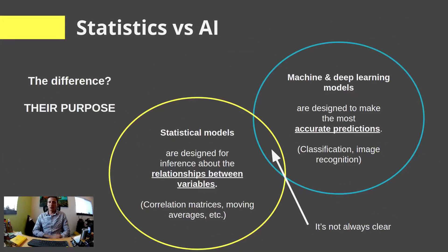So, one common question I get all the time is, what is the difference between statistics and forms of artificial intelligence? And the result is, or the truth is, the purpose.